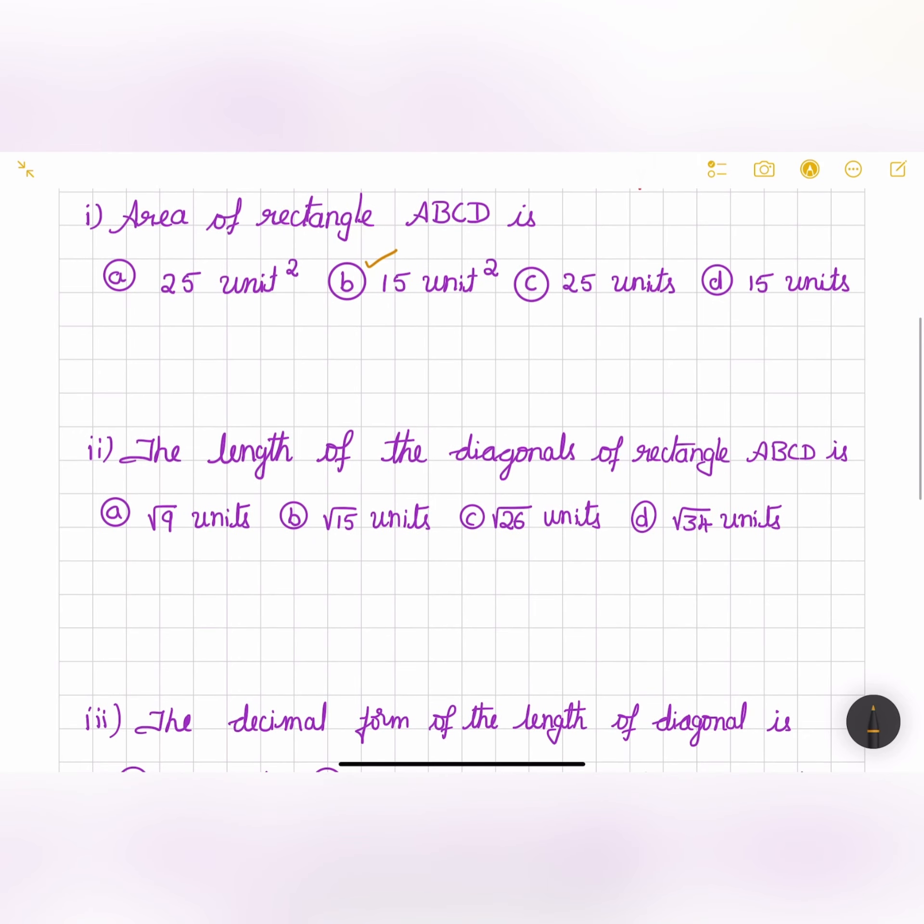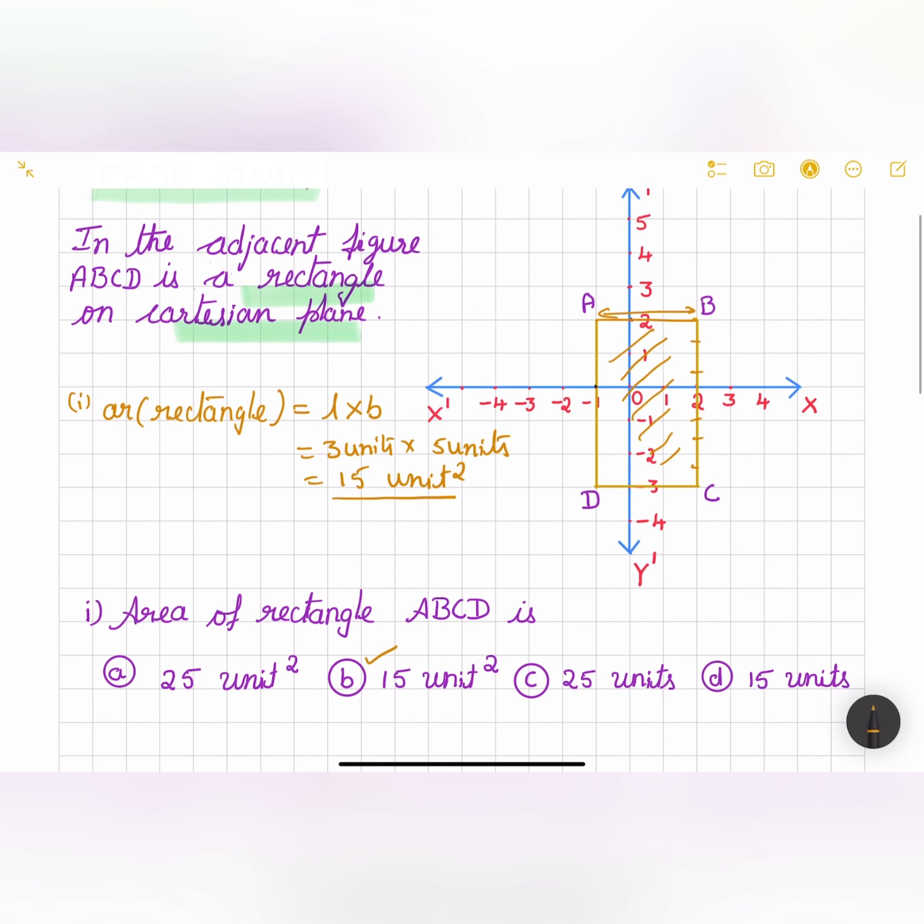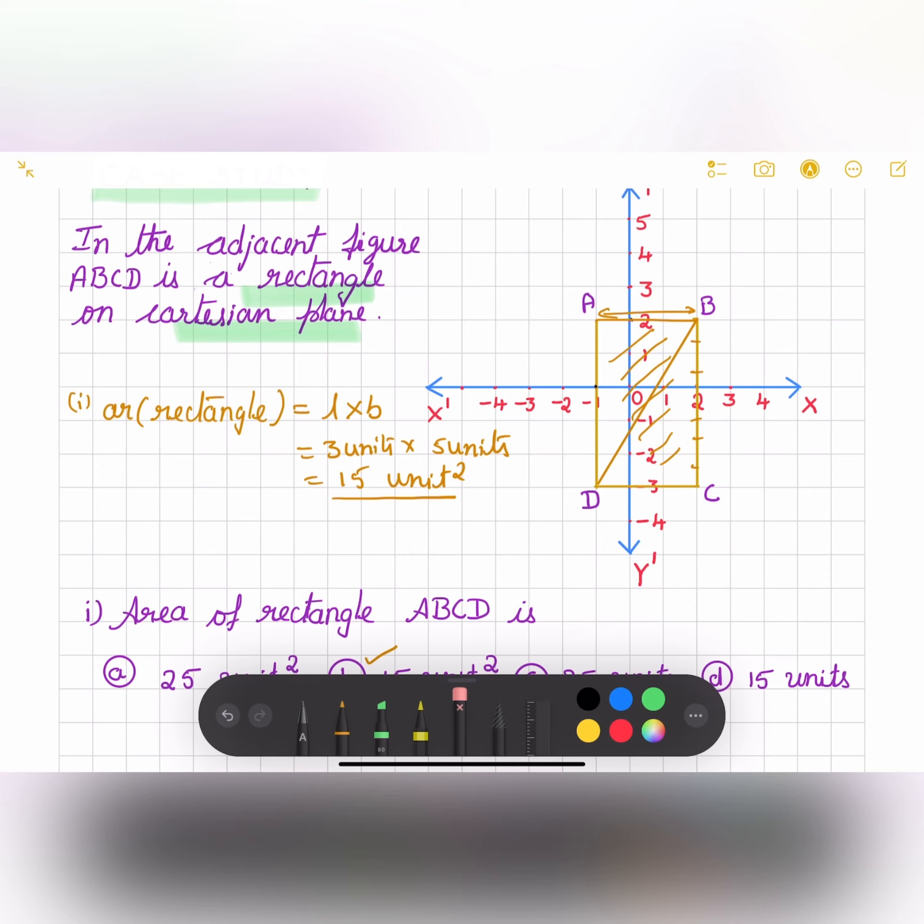Let us take a look at the second one. The length of the diagonal of rectangle ABCD is? Again, we have four options. Let us draw any of the diagonals. I will draw the BD diagonal. And then we have to find out the length of this BD. How do we find out the length of BD?